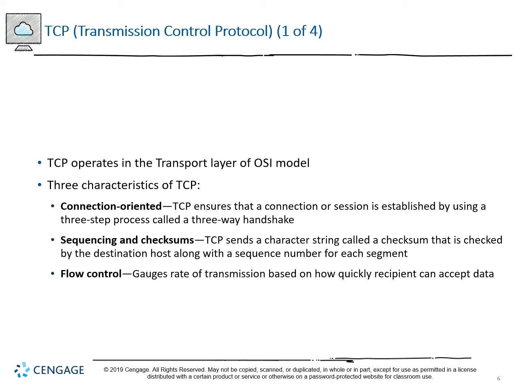Flow control provides ways to rate transmission based on how quickly a recipient can accept data. We don't want to overload a destination host by throwing a ton of information at it that it can't handle. Flow control allows us to shift the amount of transmitted material up or down in order to match the recipient's bandwidth.